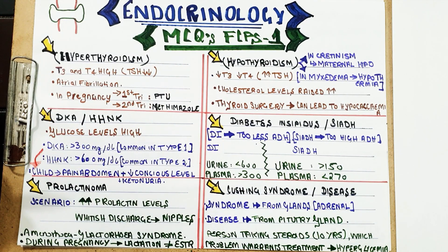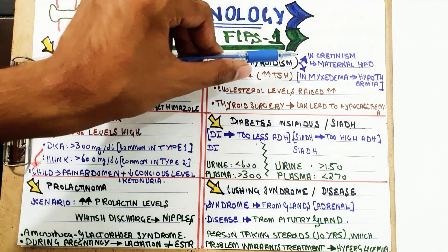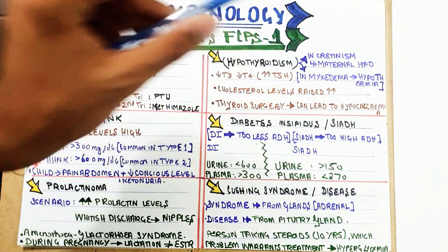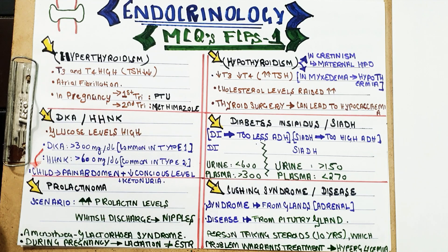Two important scenarios given in FCPS Part 1 examinations are cretinism and myxedema. In myxedema, there is a complete hypothyroid state, and MCQs will ask what condition you encounter — that is the state of complete hypothyroidism.